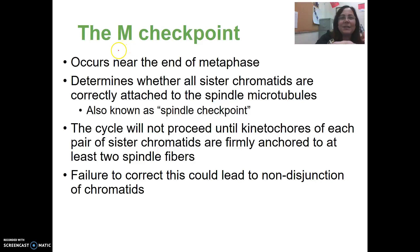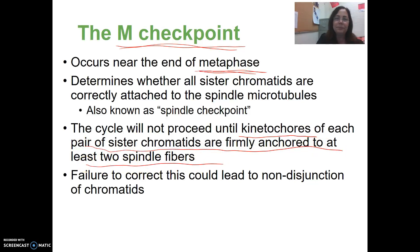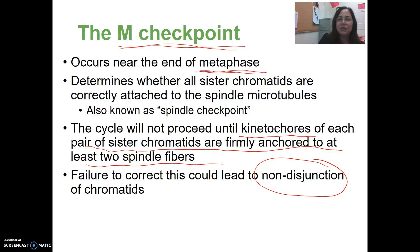The M checkpoint occurs near the end of metaphase, when the sister chromatids are lining up at the metaphase plate. The cycle will not proceed until the kinetochores of each pair of sister chromatids are firmly anchored to at least two spindle fibers. This prevents non-disjunction, which is the failure of sister chromatids to separate — causing one daughter cell to get too many chromosomes and one to get not enough.